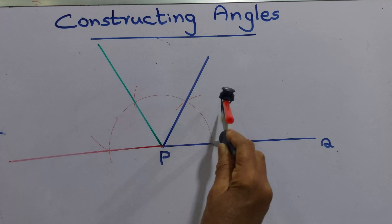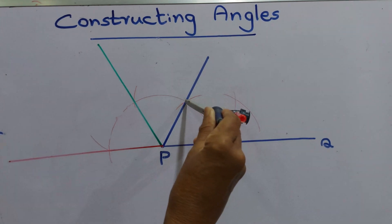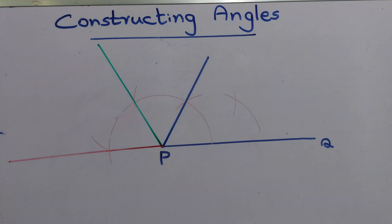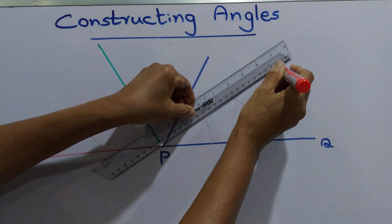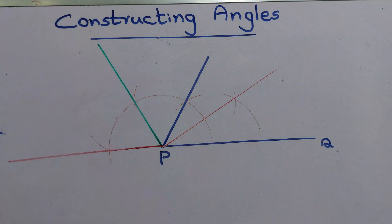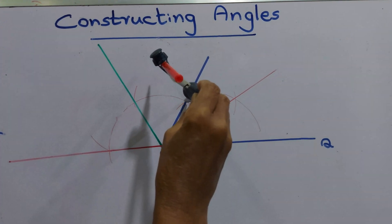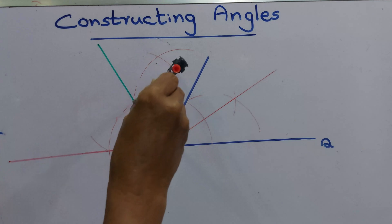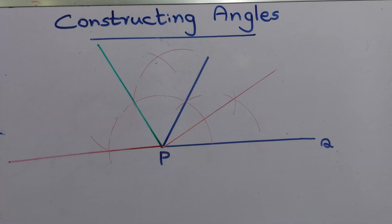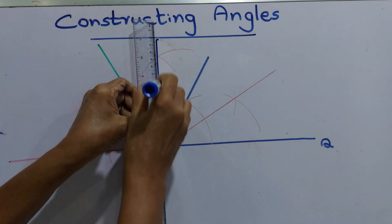There's an intersection here. From that joint, from this point, we can make another line. There are two points there — we can draw another line from here to here. Now there's another point here. Keep the compass point there, and from this point, draw another arc from here to this point.